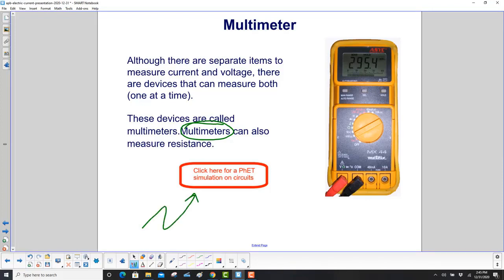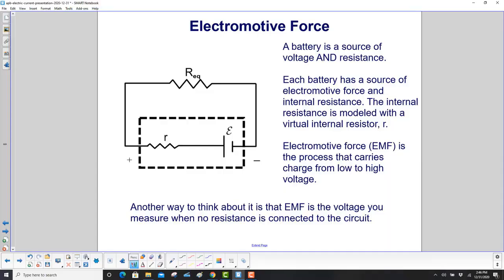A battery is a source of voltage and resistance. Here's our battery, with the positive terminal and negative terminal. Each battery has a source of electromotive force—the voltage—and an internal resistance. The internal resistance is modeled with a virtual internal resistor. It is not a real resistor, but it models the resistance inside the battery.